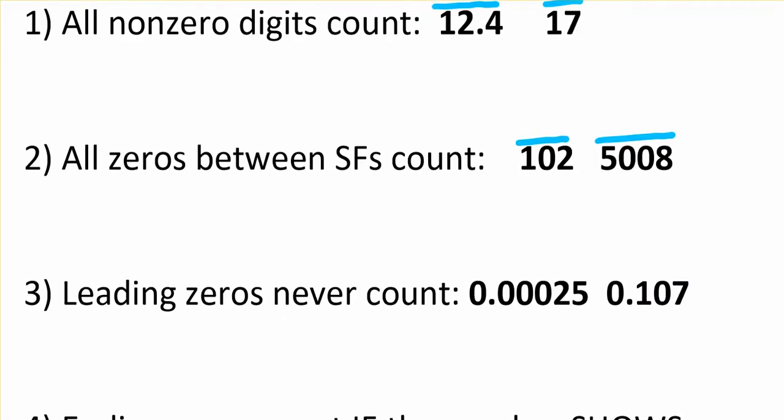Leading zeros never count. So on this number, only these two are significant. It doesn't matter where the decimal place is. All of these are leading zeros and they don't count. On this one, the sandwich one counts. So I have three that are significant there.